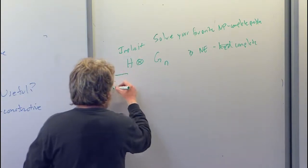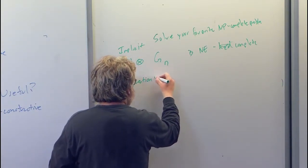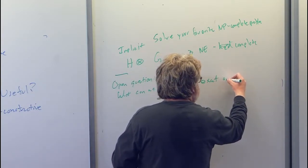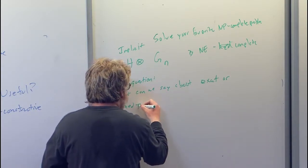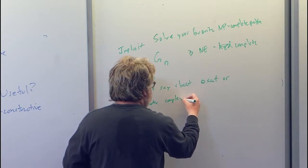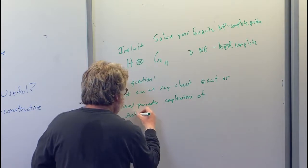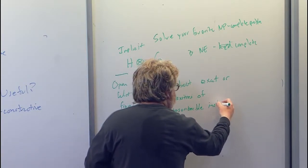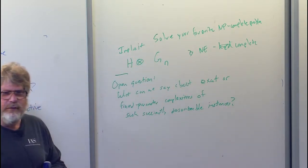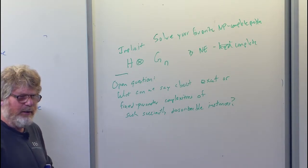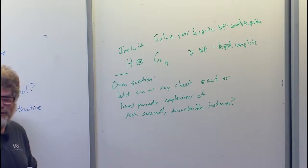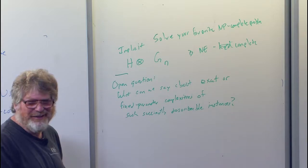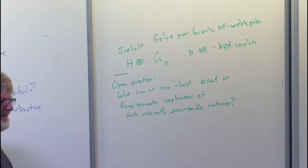The general kind of question is: what can we say about either the exact or fixed-parameter complexities of such succinctly describable instances? It's a very vague problem — I won't give an explicit dollar amount because it's so vague — but in general refer submissions to the committee on a case-by-case basis.